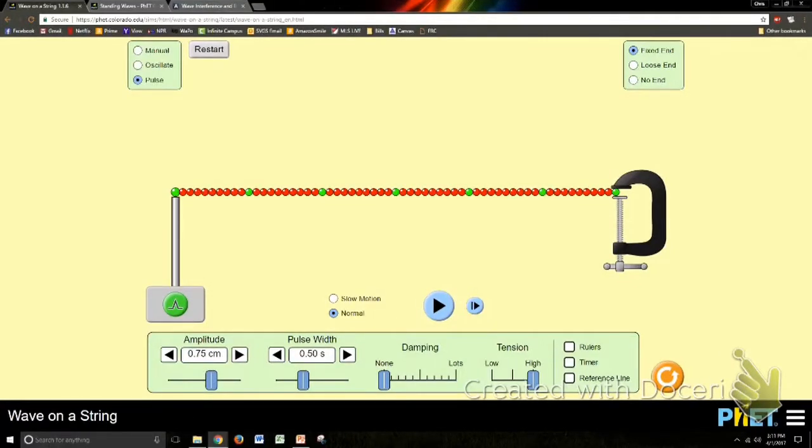If I've got a string, let's say it's fixed on one side, or both sides, when I send a pulse down, a transverse pulse, so the particles are moving at 90 degrees to the direction of the pulse, when it reaches the far end where it's clamped down, it reflects back on the opposite side.